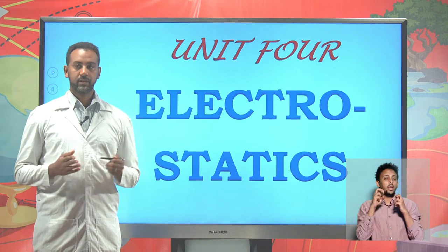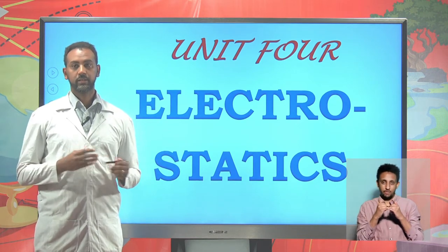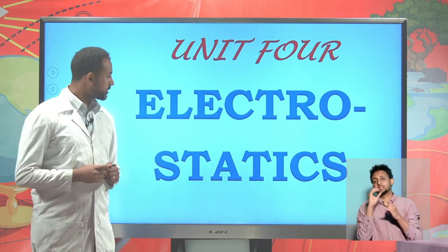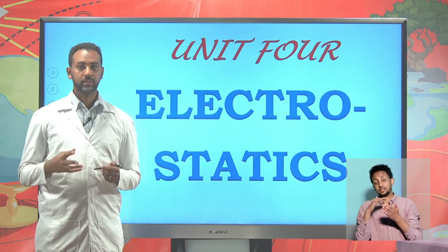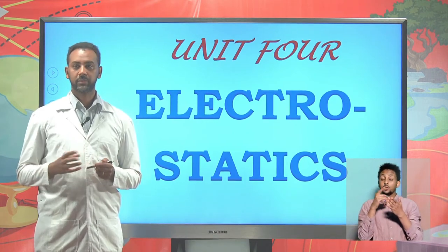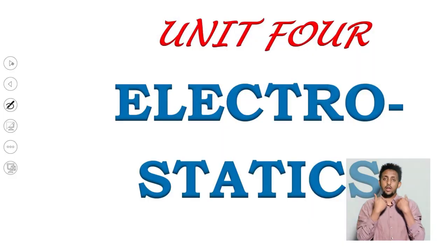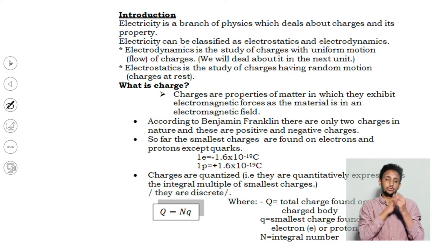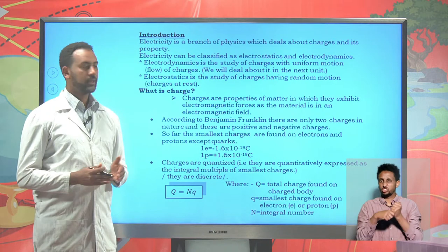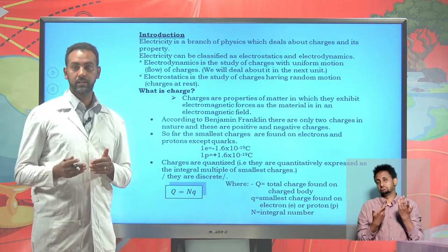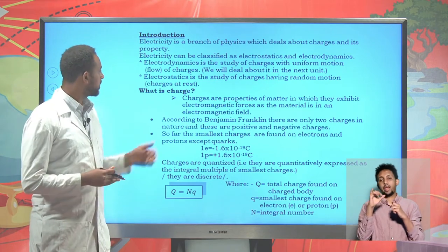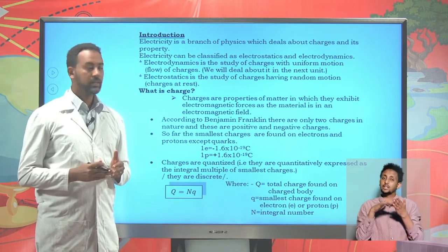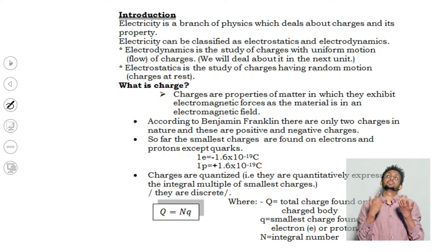Electricity can be classified as electrostatics and electrodynamics. Electrostatics is the study of charges which are at rest, or sometimes known to be having a random motion. Electricity is a branch of physics that studies charges in general, and it can be further classified as electrodynamics and electrostatics. Electrostatics is the study of charges having random motion — we call it to be at rest.